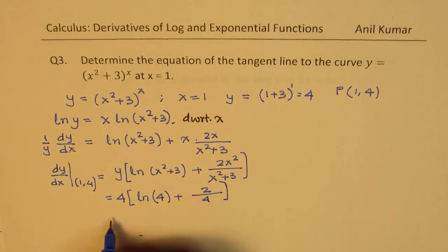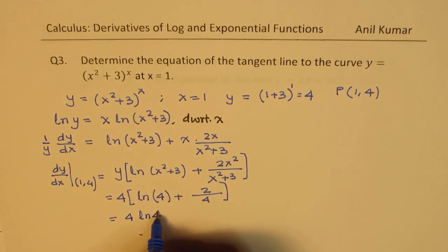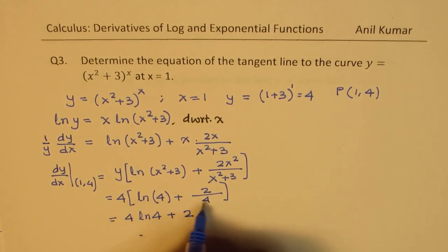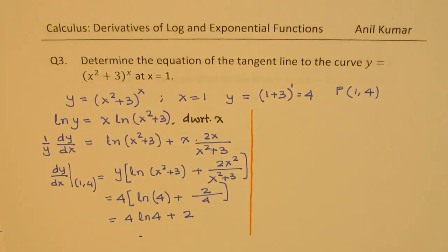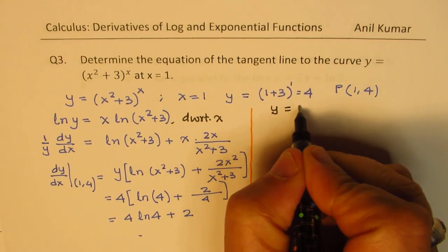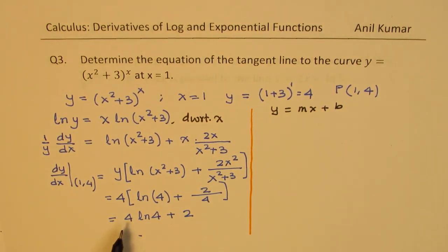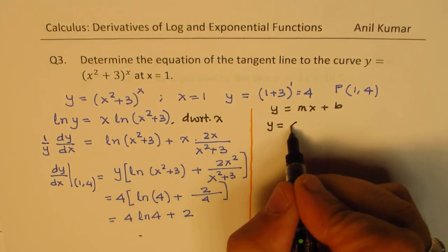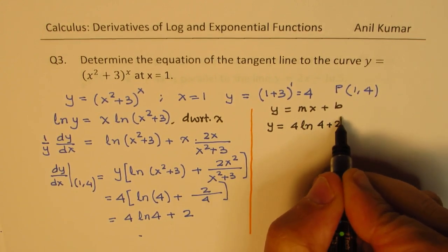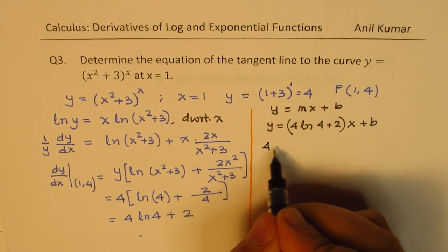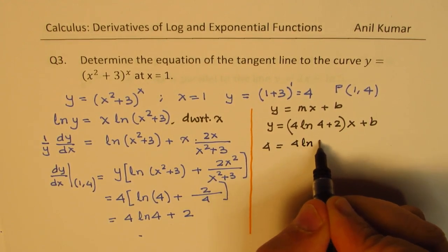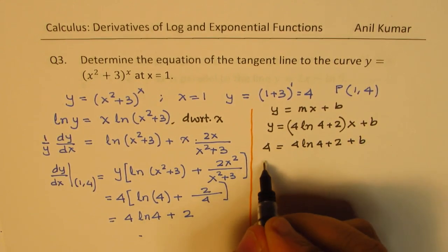So dy/dx at the point (1, 4): we multiply through by y, giving y times [ln(x squared plus 3) plus 2x squared over (x squared plus 3)]. Substituting x equals 1 and y equals 4: we get 4 times [ln(1 plus 3) plus 2 over (1 plus 3)], which is 4 times [ln 4 plus 2 over 4]. So we multiply by 4 to get a slope of 4 ln 4 plus 2.